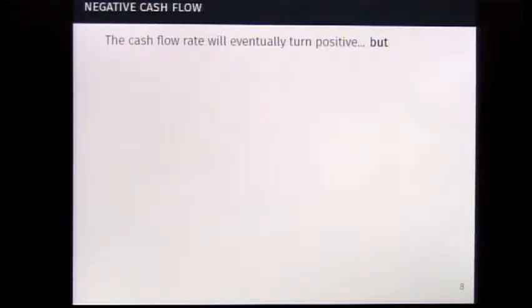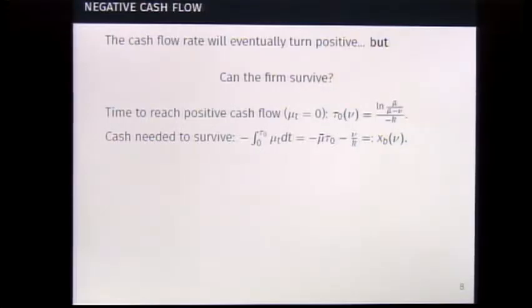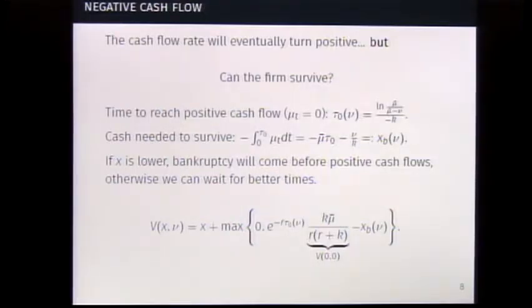We move on to the more interesting case where we start with negative cash flow. We know that if we wait long enough, we will reach profitability. But the question is, can the firm survive? And since it's explicit again, we can do all the calculations. We calculate the time it takes to reach a profitable state, that's when mu is zero. That's tau zero. Since we know how long it takes, we know the costs. We can calculate the total cost incurred before we reach that state, and we call that XB. That's how much it costs. So if our starting cash is lower than XB, there is no point, because before we are profitable we will go bankrupt.